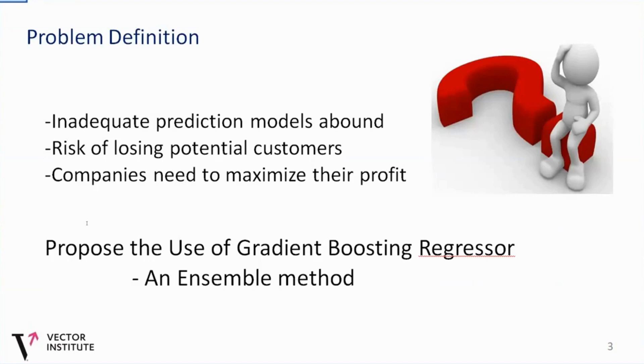The problem actually arises where we have inadequate prediction models, where companies leverage on this models for prediction, which often brings inaccurate results, which of course leads to loss in potential customers. So in our study, we try to propose the use of a gradient boosting regressor, which is an assembled method. This method leverages on the prediction of weaker classifiers in order to enhance its own prediction.